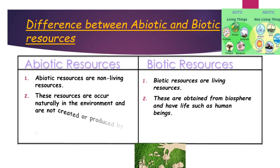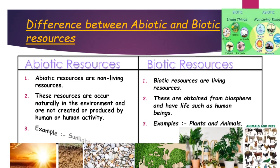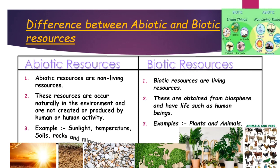Biotic resources are living resources, and abiotic resources are non-living resources not created by humans. Examples of abiotic resources are sunlight, temperature, soil, rock, and minerals, whereas examples of biotic resources are plants and animals.